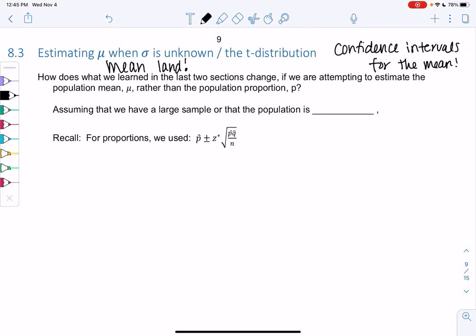How does what we learned in the past couple sections change if instead of estimating the proportion, we're now going to estimate the population mean? Before we can do anything with means, we need to have a large sample, or we need the population to be normal. N was greater than or equal to 30 in mean land.